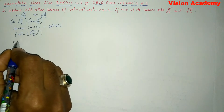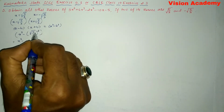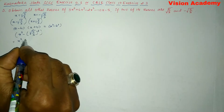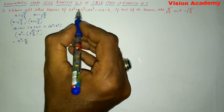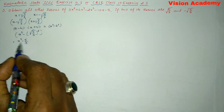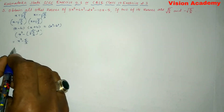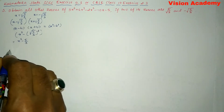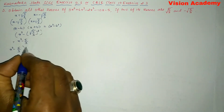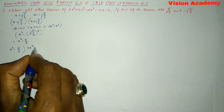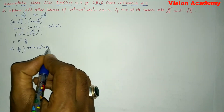This simplifies to x² − 5/3, since the square and square root cancel. Now we need to divide the given polynomial by (x² − 5/3). Let us write: (x² − 5/3) divides 3x⁴ + 6x³ − 2x² − 10x − 5.